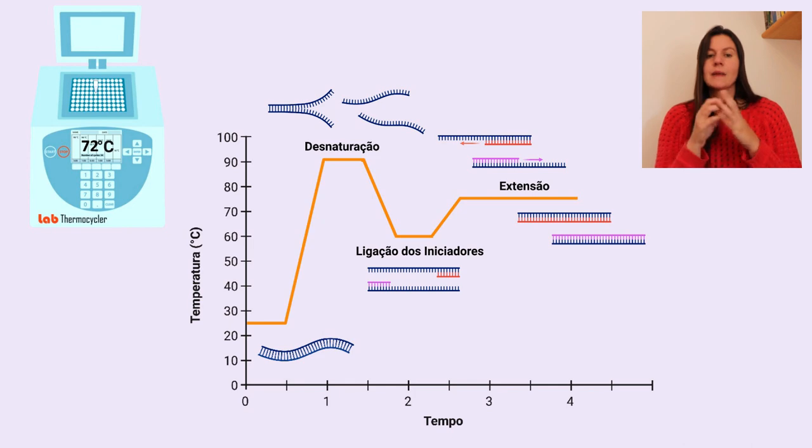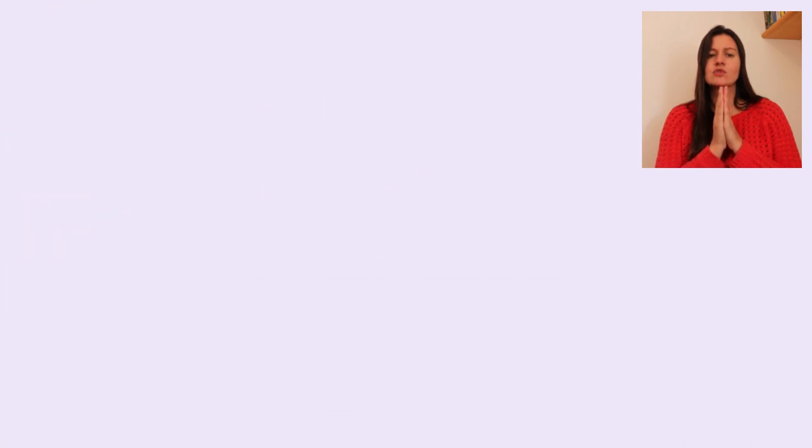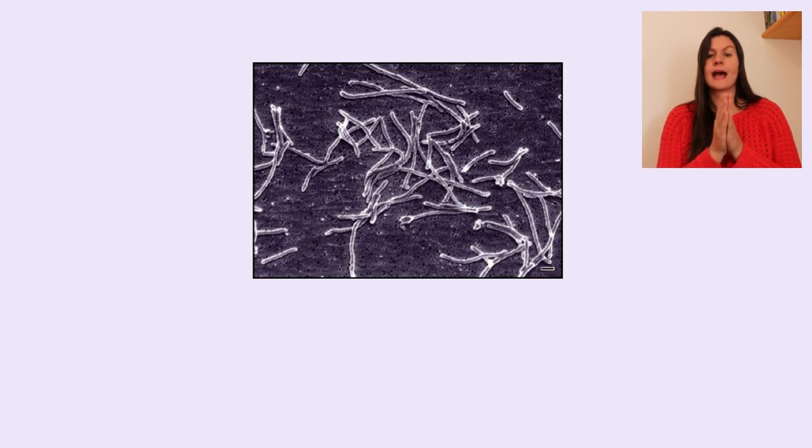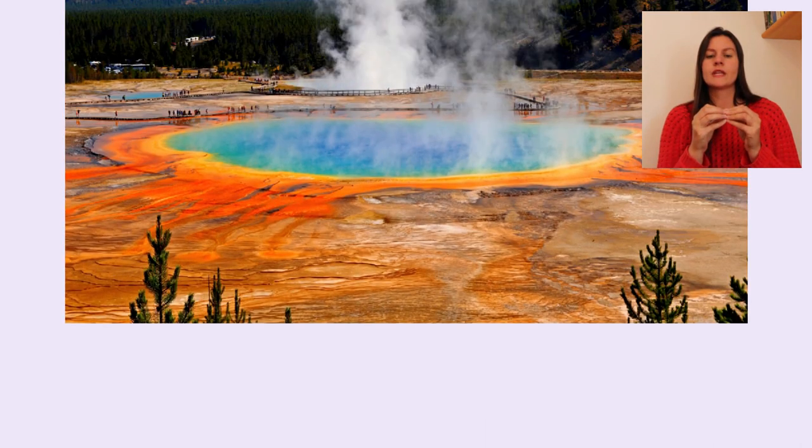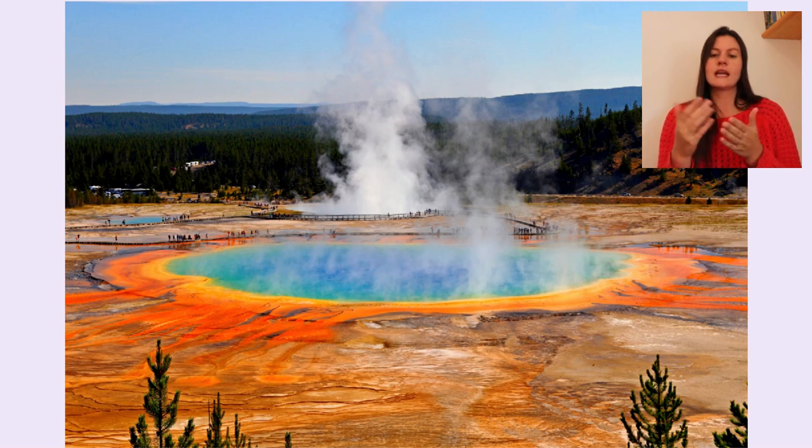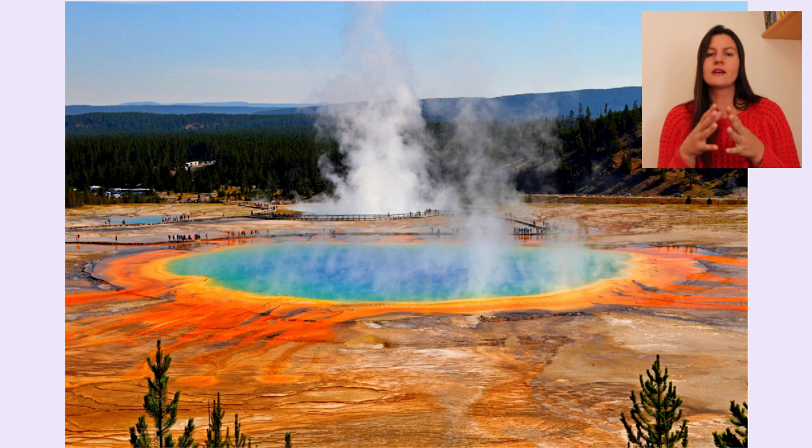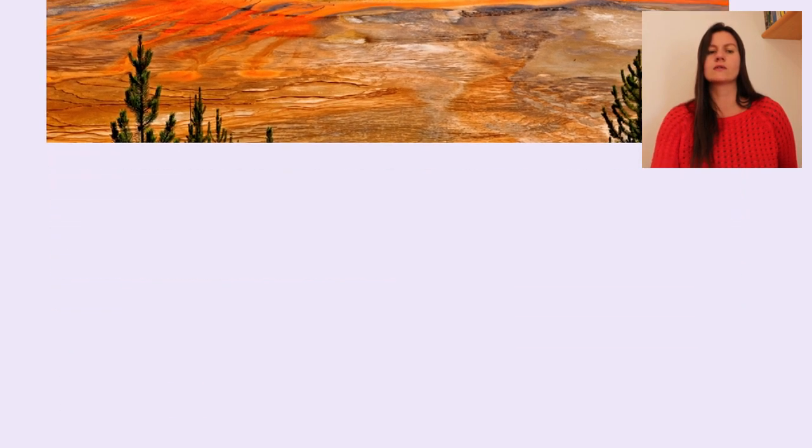A DNA polimerase mais utilizada nas reações de PCR é produzida a partir de uma bactéria super resistente ao calor, a Thermus aquaticus. Essa bactéria foi descoberta em fontes termais e a sua DNA polimerase é bastante estável ao calor. Imaginem que as DNA polimerases humanas ou ainda até de outras bactérias seriam facilmente desnaturadas e teriam a sua função perdida quando aquecidas já no primeiro passo, 95 graus.